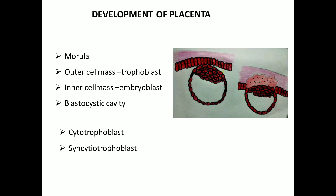Before learning how the placenta is developed, we need to review the morula. The morula divides into an outer cell mass called trophoblast and an inner cell mass called embryoblast. Within the morula, a cavity appears — the blastocystic cavity. The trophoblast can be differentiated into two types: cytotrophoblast and syncytiotrophoblast.